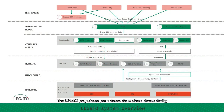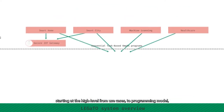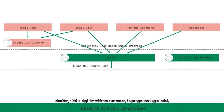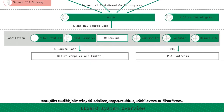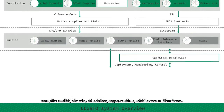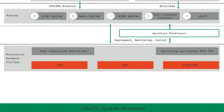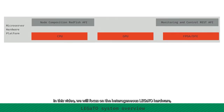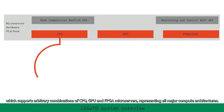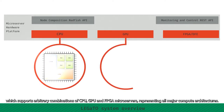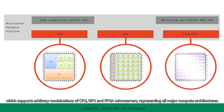The Legato project components are shown here hierarchically, starting at the high level from use cases to programming model, compiler and high level synthesis languages, runtime, middleware and hardware. In this video, we will focus on the heterogeneous Legato hardware, which supports arbitrary combinations of CPU, GPU and FPGA microservers, representing all major compute architectures.